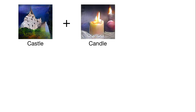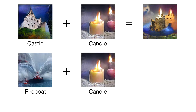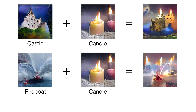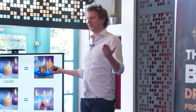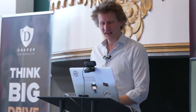For example, here's a real category — castle — and the network draws a castle; here's a candle. So this is 'please fire the castle neuron' and 'please fire the candle neuron.' Then we can ask it to fire both at the same time: 'make us a picture that causes castle and candle both to fire,' and we get something like a castle on fire. Here's a fire boat and candle, and we can generate images of fire boats fighting fires on other fire boats.